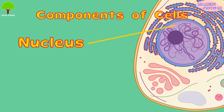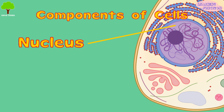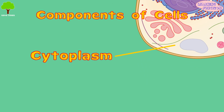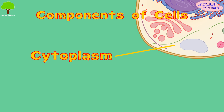The nucleus is the brain of the cell. It uses chromosomes to instruct the rest of the cell. Cytoplasm is the stuff that fills up the rest of the cell. The other components of the cell float around in the cytoplasm, and it's mostly water.